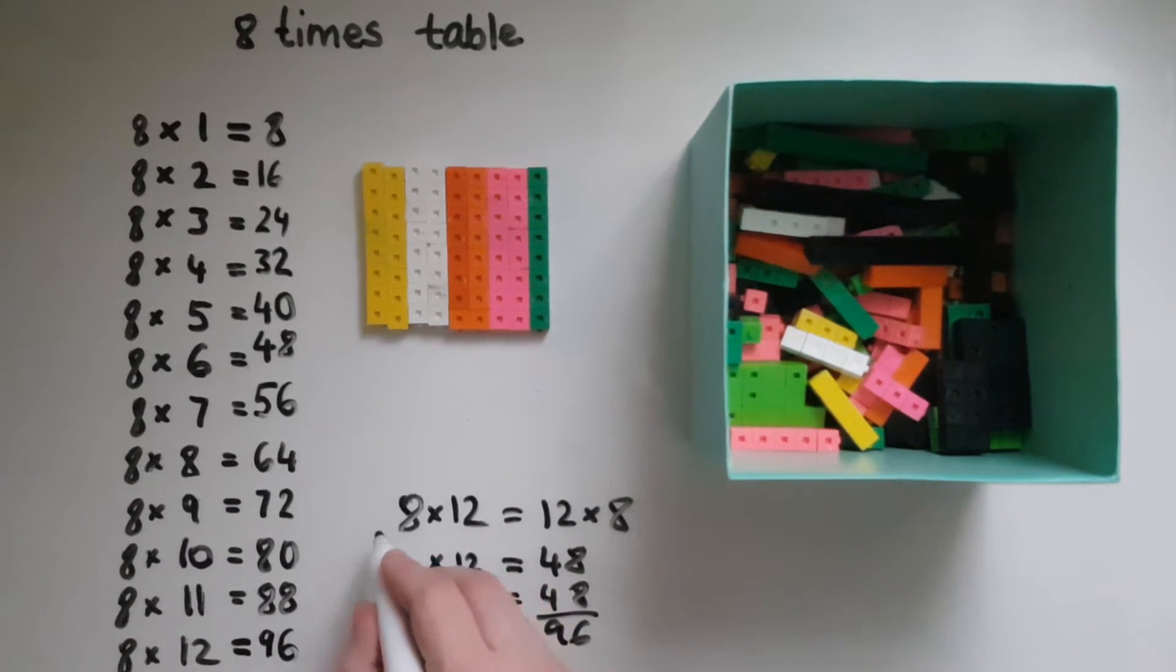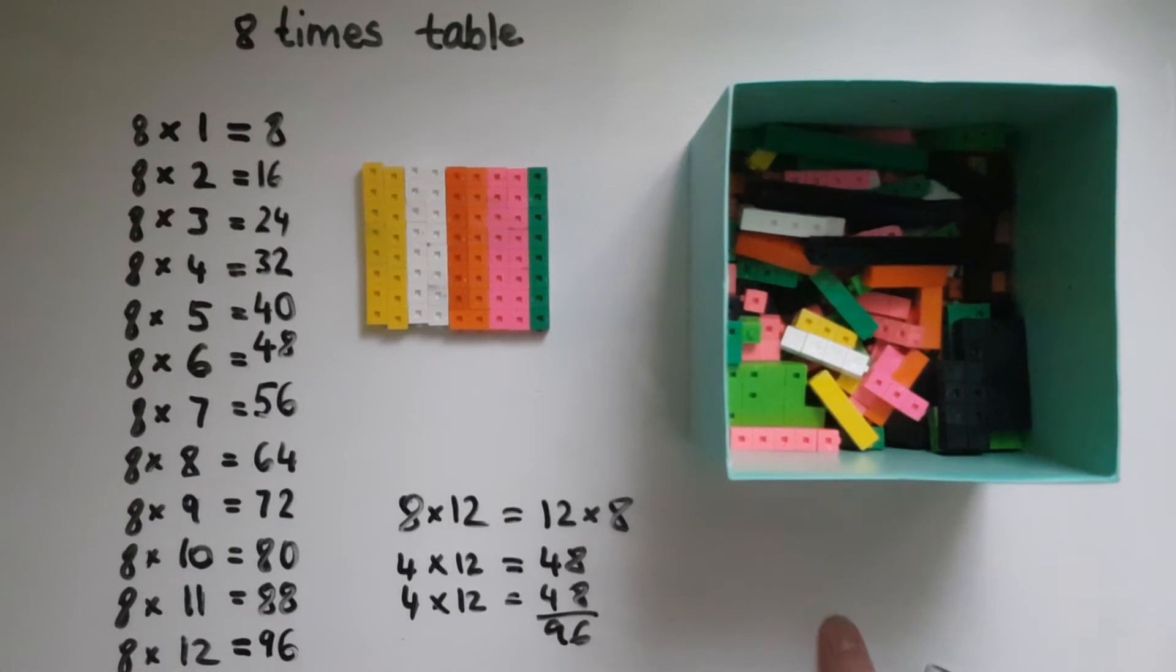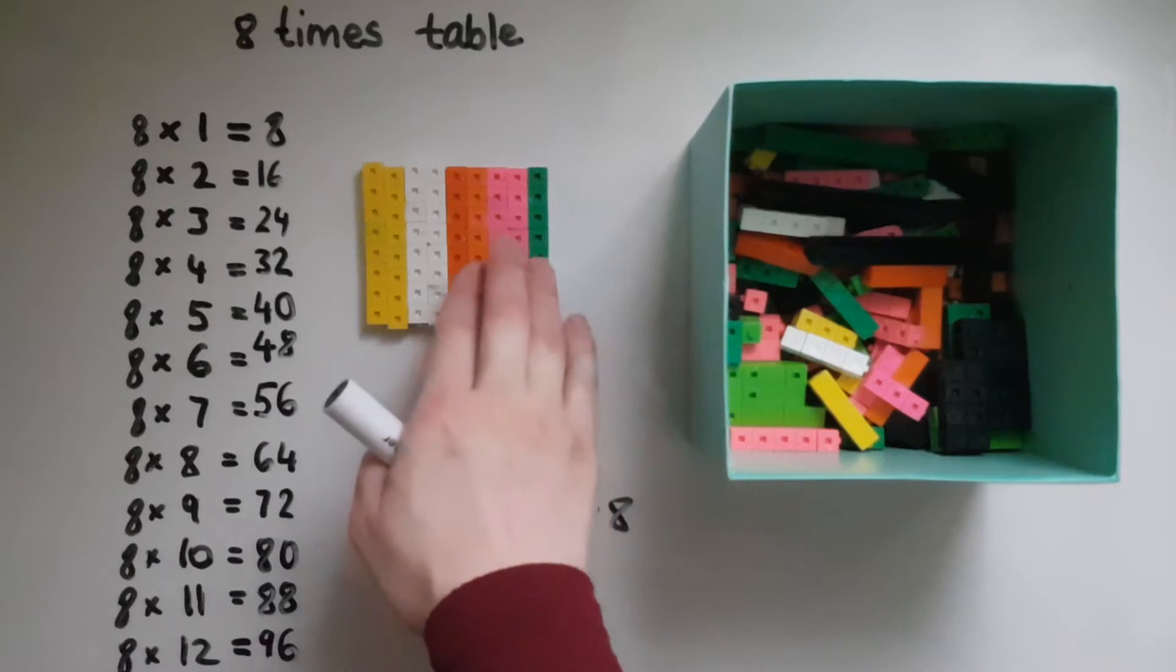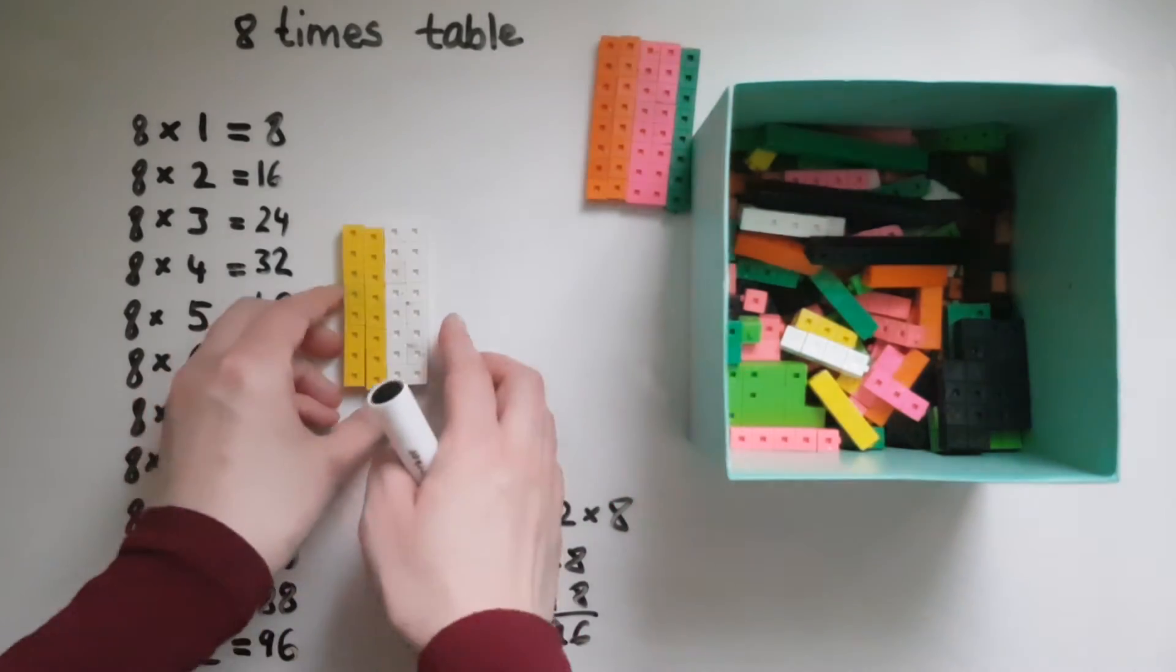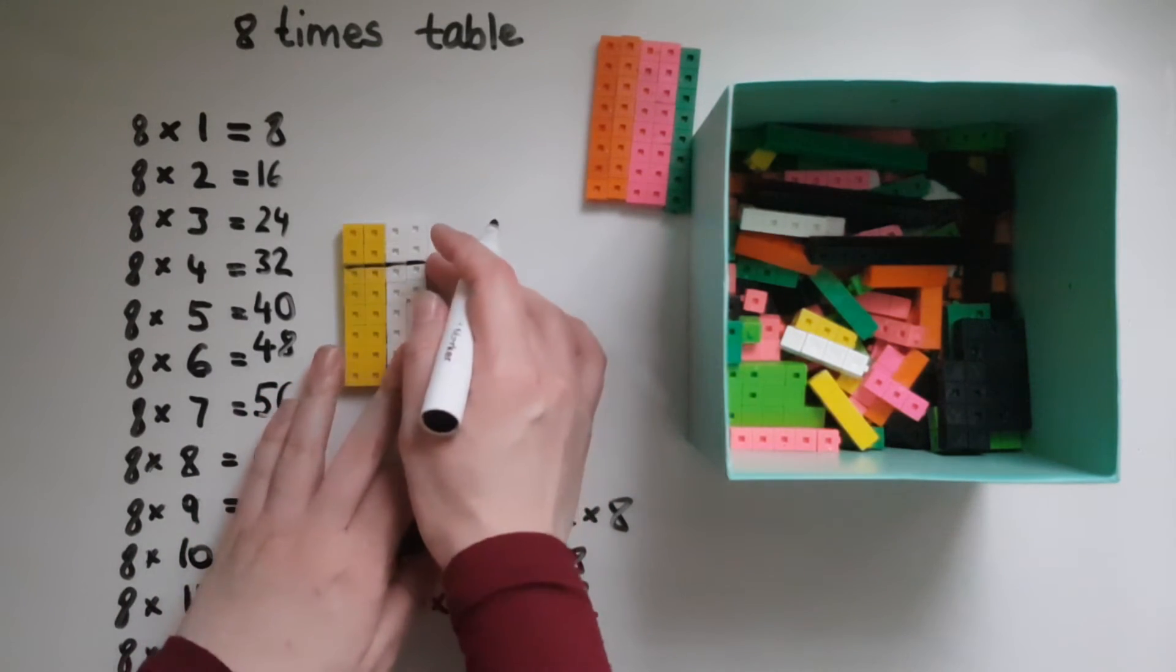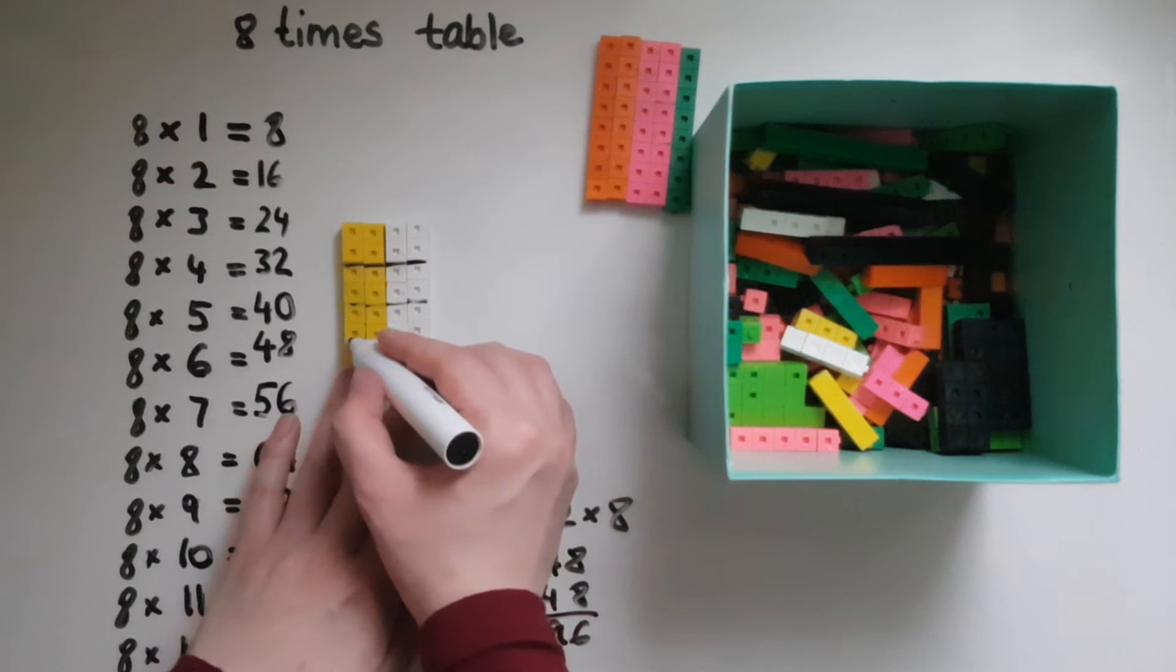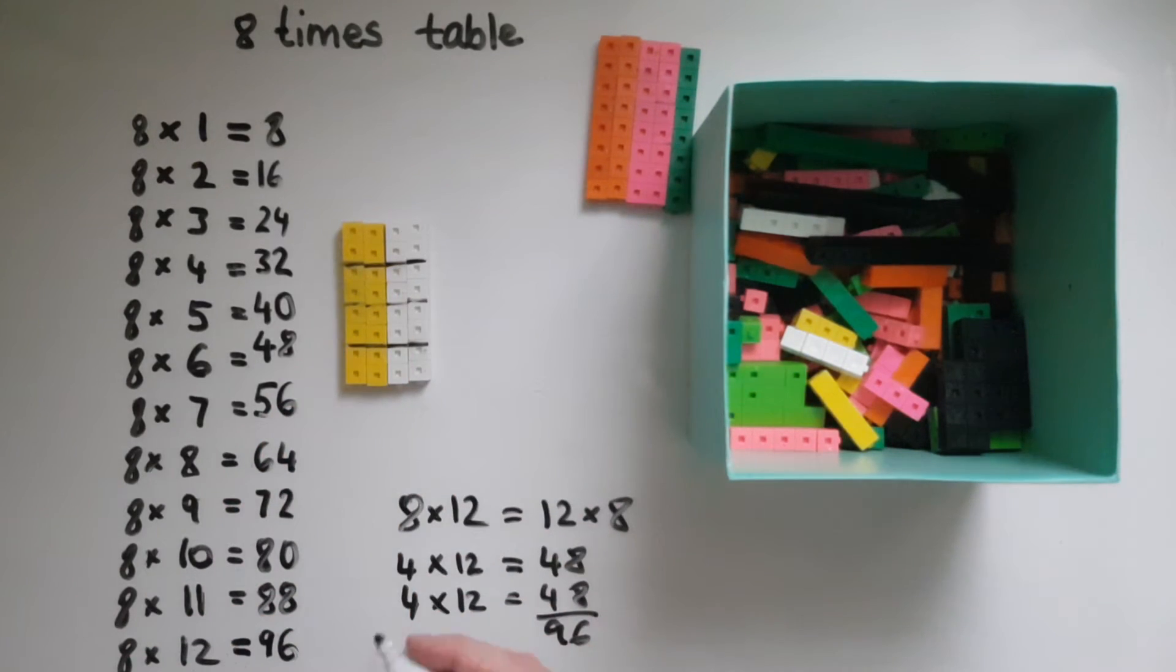So this is a really important rule that can be applied throughout multiplication. 8 can be broken down into 2 and 2 and 2 and 2 for example. So if we do 8 times 4, I can break this down into 2. 2 rows of 4, another 2 rows of 4, another 2 rows of 4, and a final 2 rows of 4.